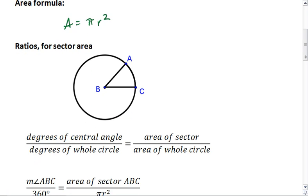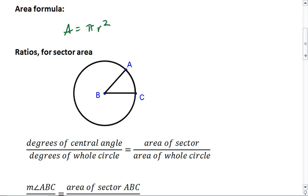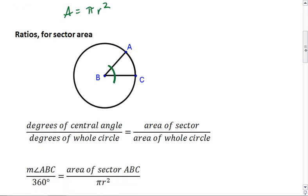Then the ratios for a sector area are as follows. The degrees of our central angle, we put over the degrees of a whole circle. So whatever the measure of angle ABC is, we put over 360. This is going to equal the area of the sector in relationship to the area of the entire circle. So again, if this was 40 degrees, then this means we're in a 1 to 9 ratio of both degrees and area and arc length. Everything stays in that 1 to 9 ratio.